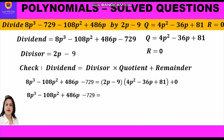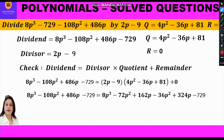Expanding the right-hand side: first multiply 2p by all three terms of the trinomial — 2p × 4p² = 8p³, 2p × (−36p) = −72p², 2p × 81 = 162p. Then multiply −9 by all three terms — (−9) × 4p² = −36p², (−9) × (−36p) = 324p, (−9) × 81 = −729.